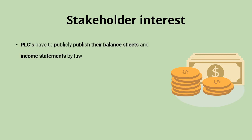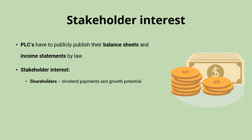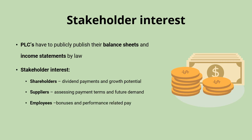Balance sheets and income statements are key financial documents that public limited companies are required by law to publish publicly. Shareholders, potential shareholders, and other stakeholder groups can then review company performance. Shareholders look at short-term profits for dividend payments and long-term growth potential. Suppliers assess the ability to pay when negotiating payment terms and the likelihood of future orders. Employees want to see company success to inform pay negotiations, and creditors want to assess the business's ability to repay money being lent to them.